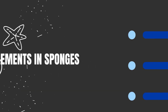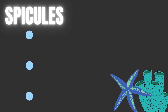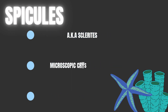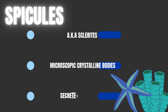Spicules are the skeletal elements of sponges and are also called sclerites. These are microscopic crystalline bodies and are generally formed of either simple spines or of spiny rays radiating from a common point. These are created by special amoebocytes of mesoglia which are called scleroblasts, derived from the archaeocytes.